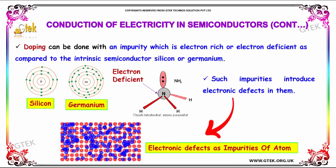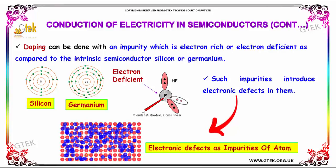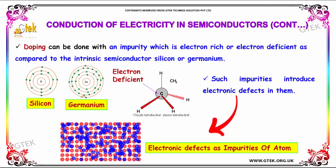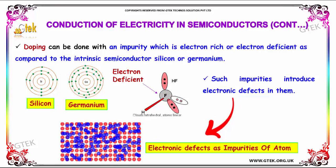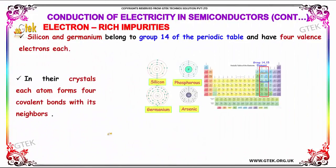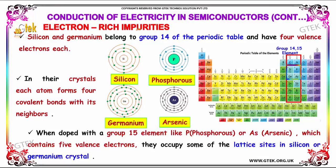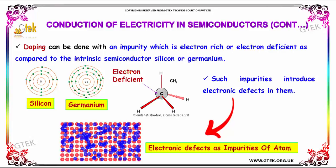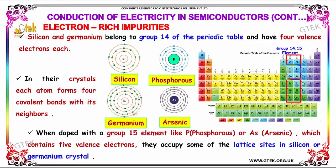Doping can be done with an impurity which is electron-rich or electron-deficient compared to the intrinsic semiconductor silicon or germanium. Such impurities introduce electronic defects in them. Now we are looking at electron-rich impurities. Silicon and germanium belong to group 14 of the periodic table and have four valence electrons.